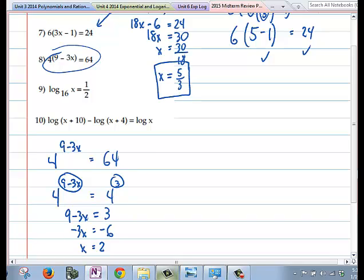And when we go back and check this out, we just plug 2 in, and you would have 4^(9-3(2)). I'm plugging the 2 back into the original spot. Does that equal 64? And in this case, you end up getting 4^3, which does equal 64. So congratulations, you've just solved that problem.